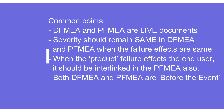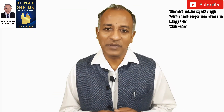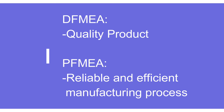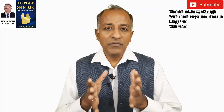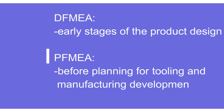Key differences: when we talk about Design FMEA, the focus is on product quality, whereas Process FMEA focuses on reliable and efficient manufacturing processes. DFMEA is linked with the second phase of APQP — product design and development — while PFMEA is linked with the third phase of APQP — process design and development. DFMEA is initiated in the initial stages of product design; PFMEA should be initiated before planning for tooling or manufacturing process design.